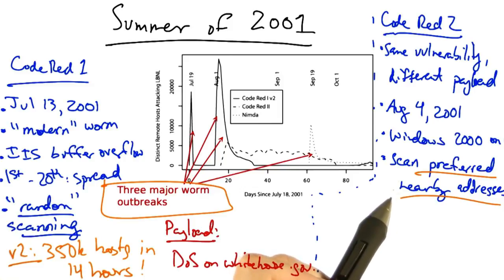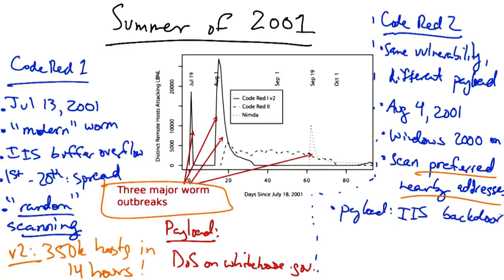This notion of preferential scanning can speed up infections in some cases by increasing the probability that scanning will find another vulnerable host. The payload of this worm was an IIS backdoor, and the worm was completely dead by design by October 1st, 2001.